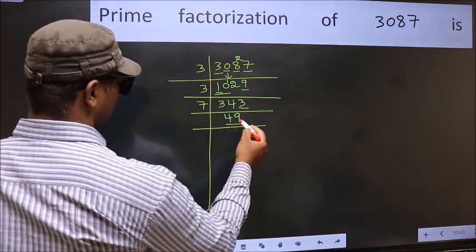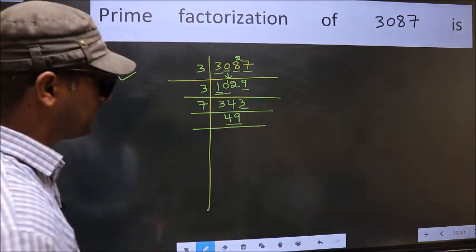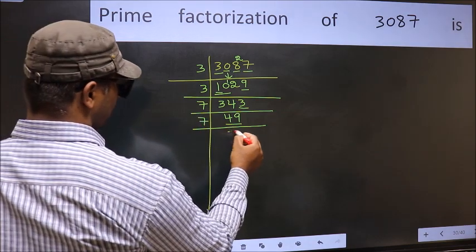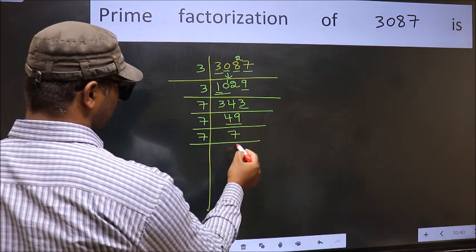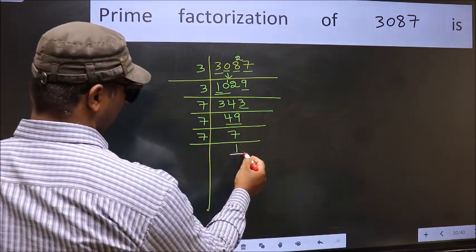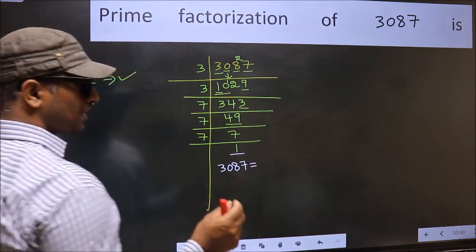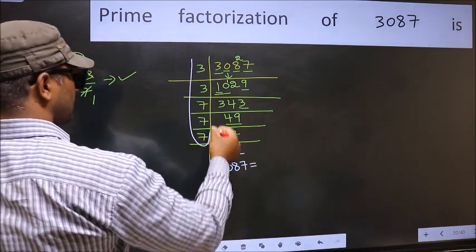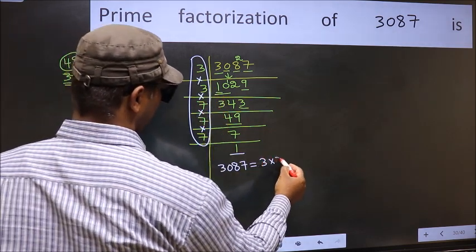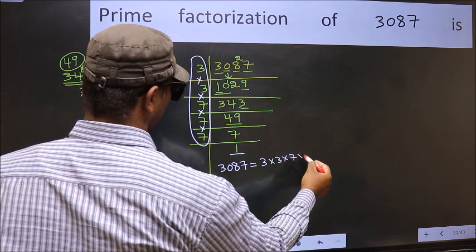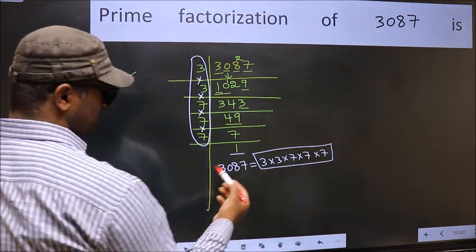Now here we have 49. Always remember: 7 times 7 is 49. So 7 once 7, and we get 1. So the prime factorization of 3087 is the product of these numbers: 3 × 3 × 7 × 7 × 7. This is the prime factorization of 3087.